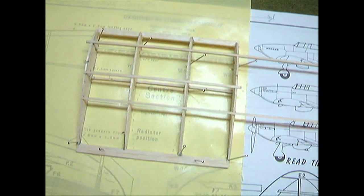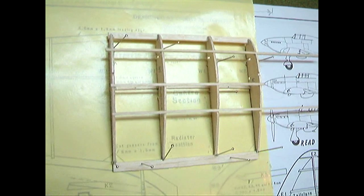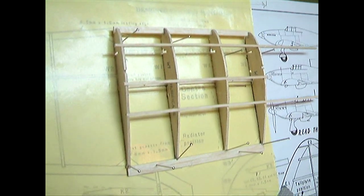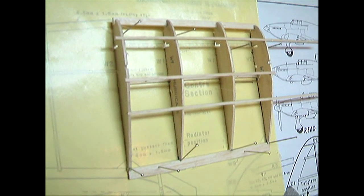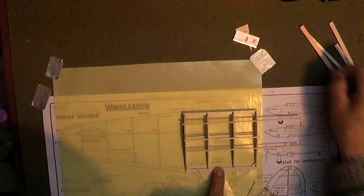My attention is now taken to the construction of the wings. As with the fuselage, the components are pinned to the plan and glued together with balsa cement.